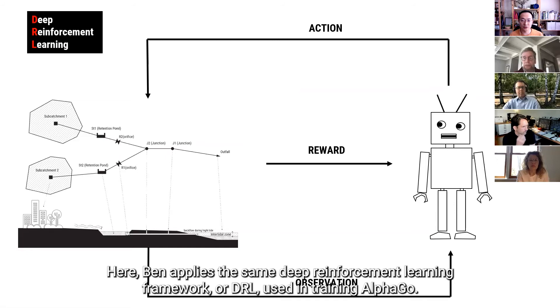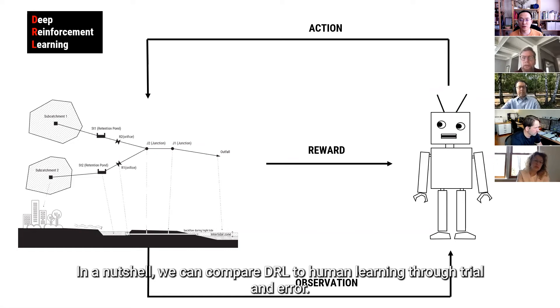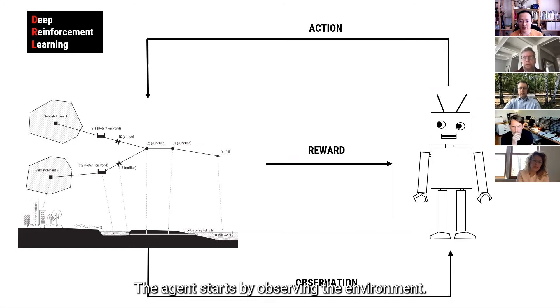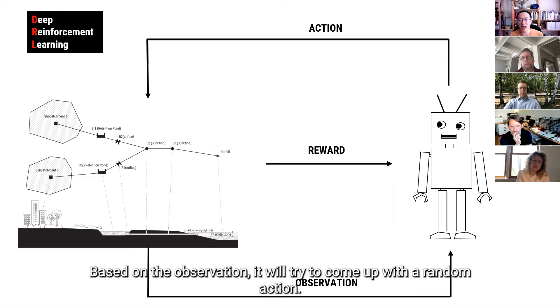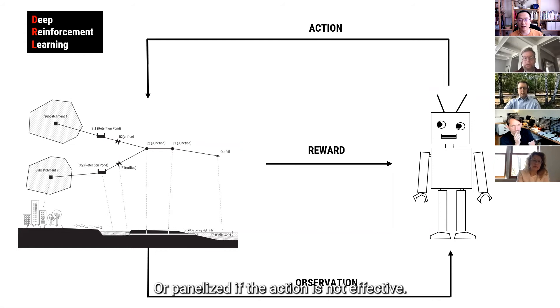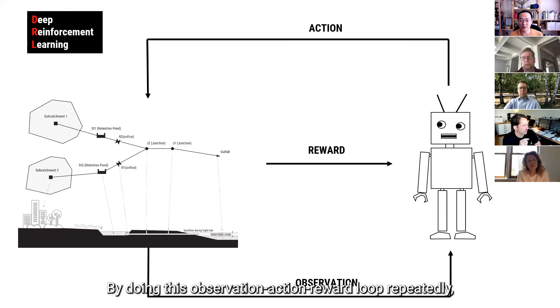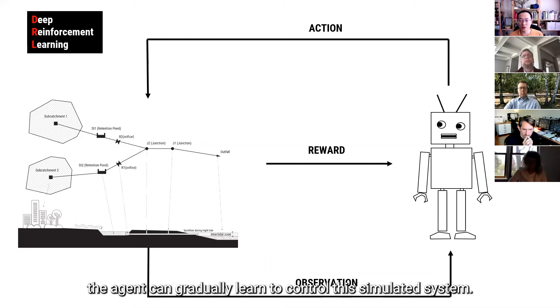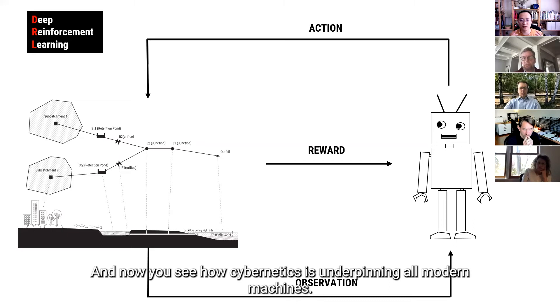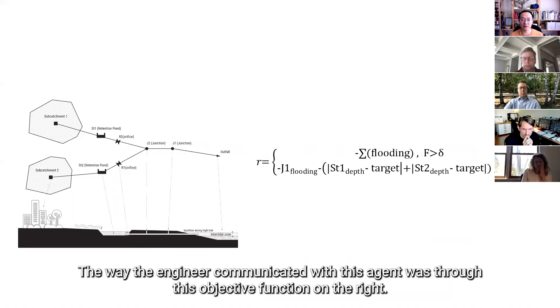So, here, Ben applies the same deep reinforcement learning framework, or DRL, used in training AlphaGo. So, basically, in a nutshell, we can compare DRL to human learning through trial and error. So, the agent starts by observing the environment. Based on this observation, it will try to come up with a random action. If the action is effective, then the agent gets rewarded, or it will be penalized if the action is not effective. So, by doing this observation, action, and reward loop repeatedly, the agent can gradually learn to control the simulated system. And now, you see how cybernetic thinking is actually underpinning all modern machines. So, the way my engineer friend, Ben, communicated with this agent was through this objective function on the right. And, actually, it turns out that most machine learning research is eventually down to designing a good objective function that articulates what the engineers want.